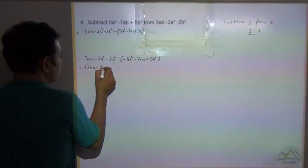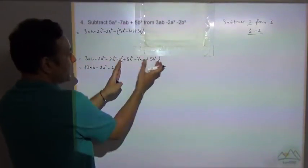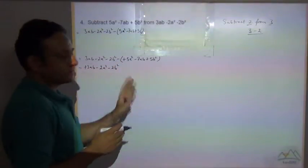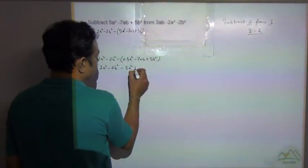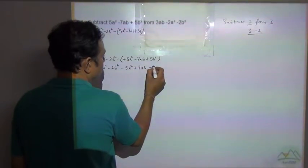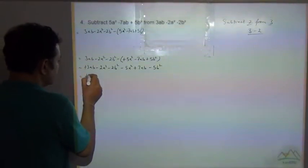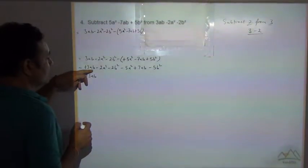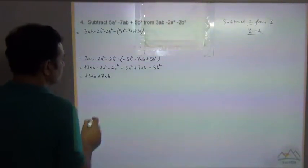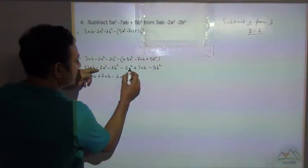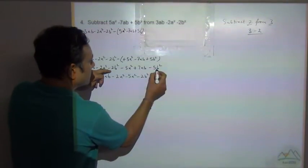When we open the bracket, the minus sign outside multiplies with all terms inside: minus times plus equals minus, minus times minus equals plus, minus times plus equals minus. Now rearranging like terms: plus 3ab minus 7ab for the ab terms; minus 2a² minus 5a² for the a² terms; minus 2b² minus 5b² for the b² terms.